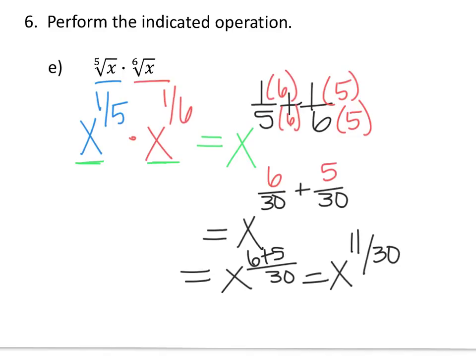We could leave our answer as x to the 11/30, or we could go further and write it back into radical form. The numerator of the exponent is your exponent in radical form and the denominator is the index number. So we could write it as the 30th root of x to the 11th. These two are equal.